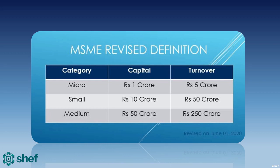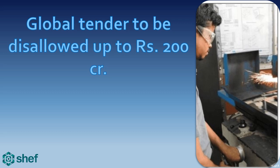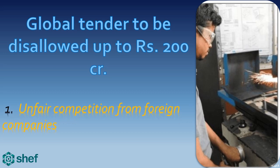The fifth reform is that global tenders are to be disallowed up to 200 crore. The government provides many tenders like building roads and hospitals, and has decided that all tenders up to 200 crore will be cancelled for foreign companies. This is because Indian MSMEs are facing unfair competition from foreign companies, by which most tenders were going to foreign companies. The main benefit of this reform is that it promotes self-reliance by encouraging Indian MSMEs to produce themselves and restricting foreign companies.